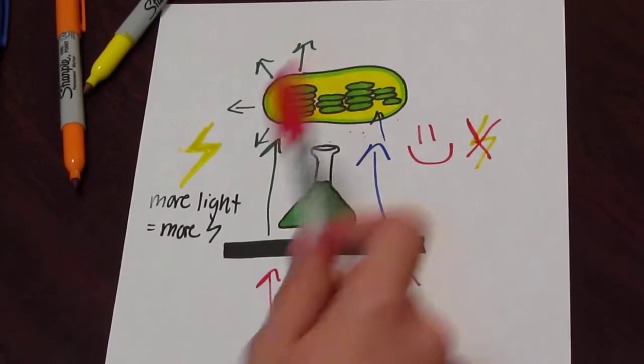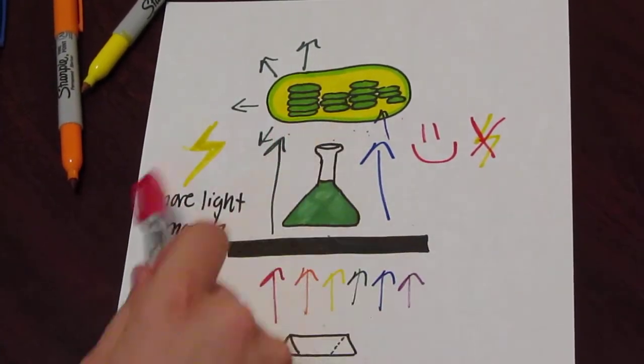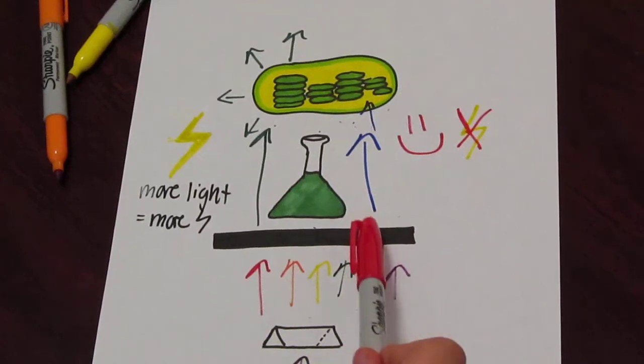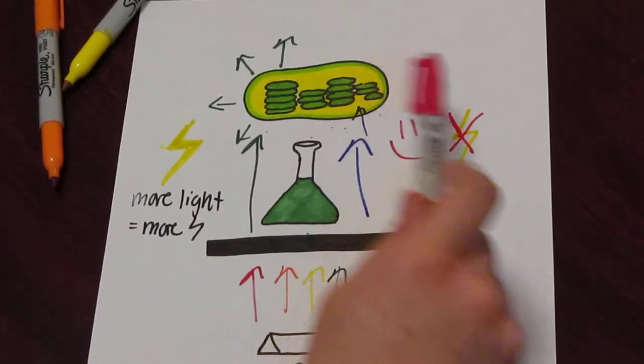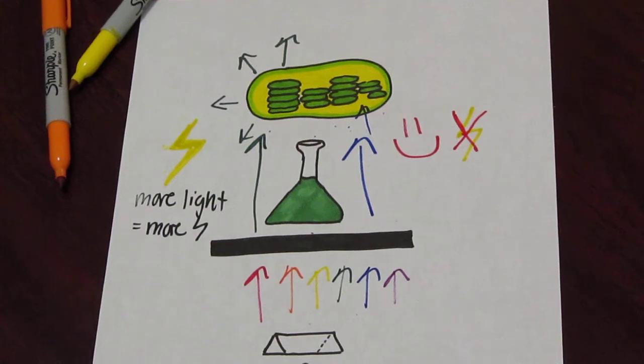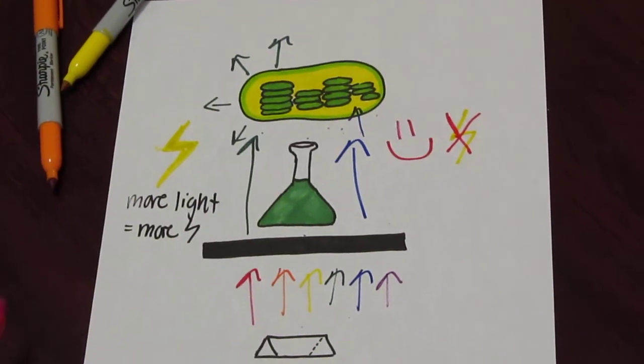Green light will produce electricity because it's not being absorbed and it's passing through. Blue light and other colors are absorbed by the chloroplast, so it will not produce electricity because it's not making it through to the device. Thanks for watching the Vicki Academy.